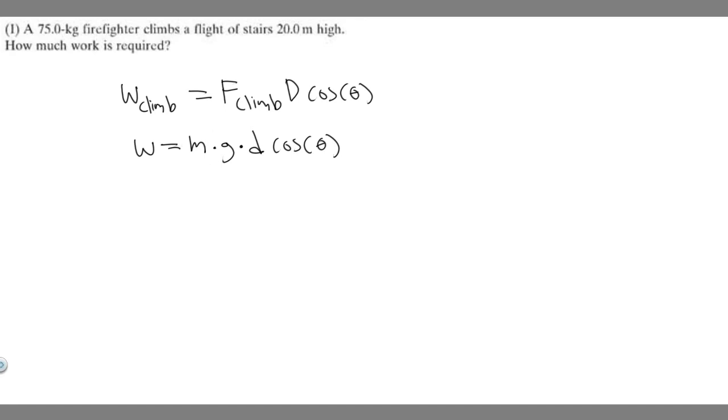And so if you keep in mind, we know the mass. The mass is going to be 75 kilograms. So let's write that down. Mass equals 75 kg. Gravity is just going to be the force of gravity, which is 9.8 meters per second squared. And then d is going to be the distance they travel, which is 20 meters. So d equals 20 meters.